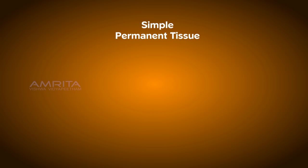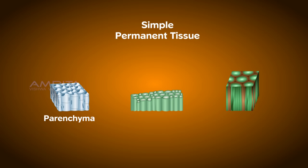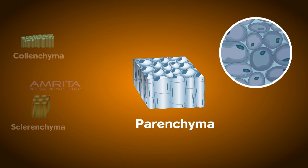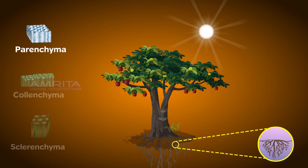Simple permanent tissue is composed of similar types of cells that have a common origin and function. Based on their function, they are further classified into parenchyma, colenchyma and sclerenchyma. The parenchyma tissues are oval-shaped cells with thin cell walls and have extensive spaces between the cells. They aid in photosynthesis, storage and also help aquatic plants to float. They are composed of living cells found in roots, stems, leaves and flowers.